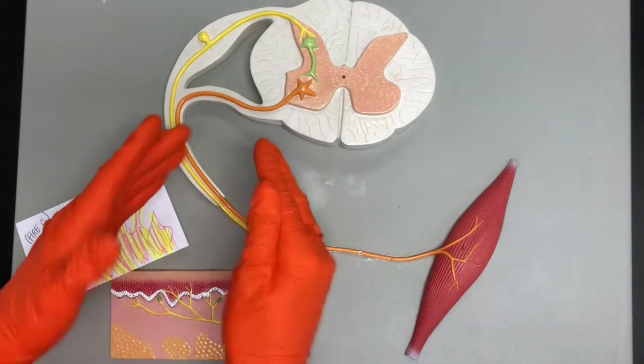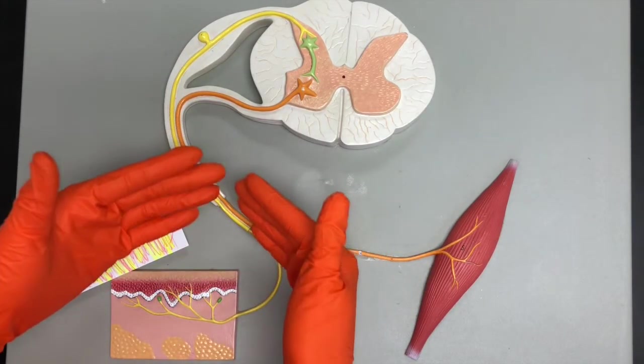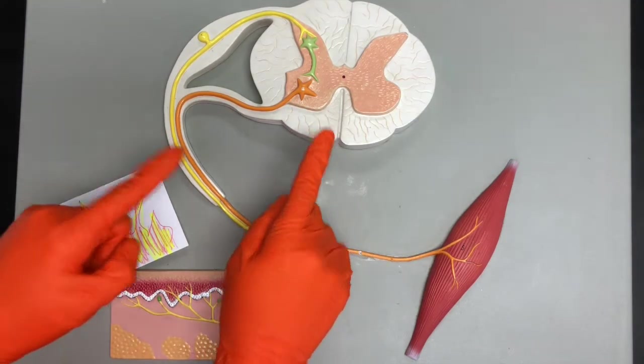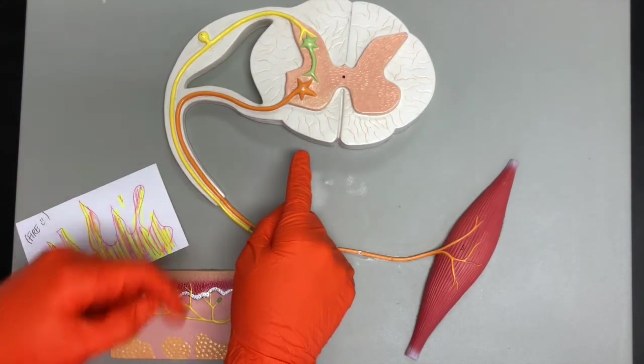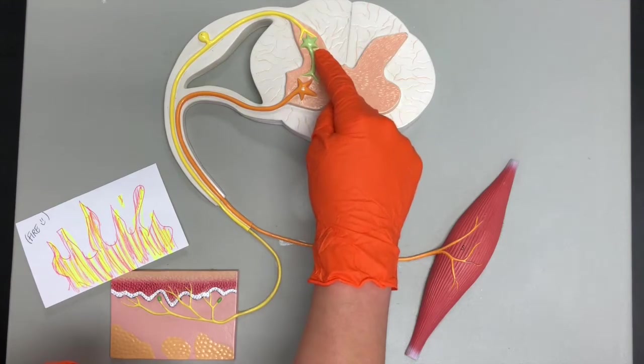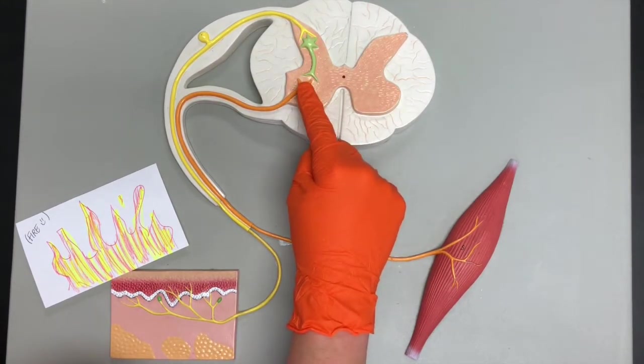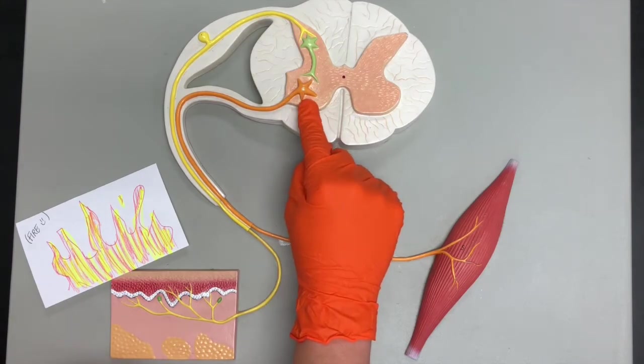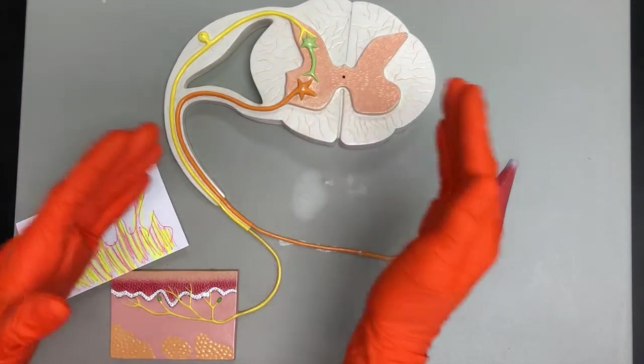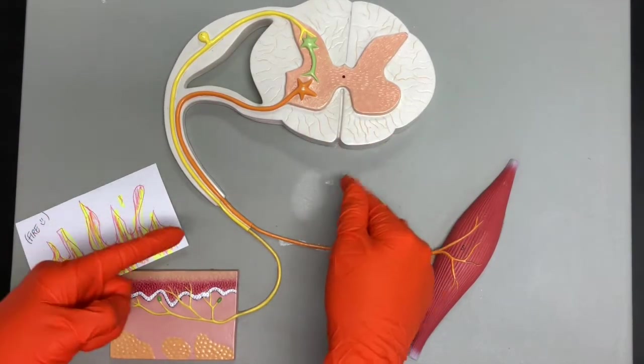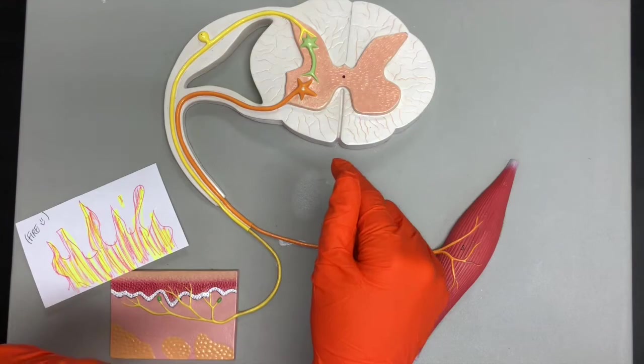So this is again going back to that structural versus functional classification of neurons. The functional classification for the interneuron is that we are associating between the sensory and the motor. The functional classification of the motor neuron is that it is going to cause some type of movement. What do motor neurons look like? Well remember.